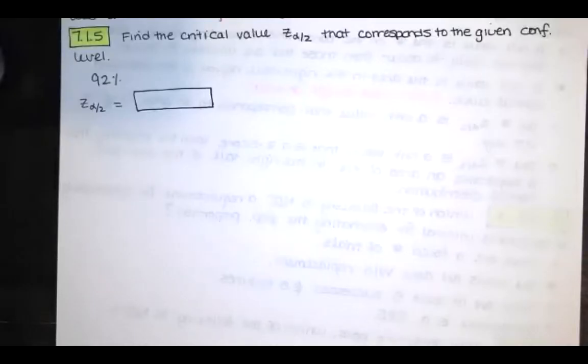In this video, we solve problem 7.1.5 from Essentials of Statistics, 6th edition by Mario Triola. Here we're asked to find the critical value z sub alpha over 2 that corresponds to a given confidence level.